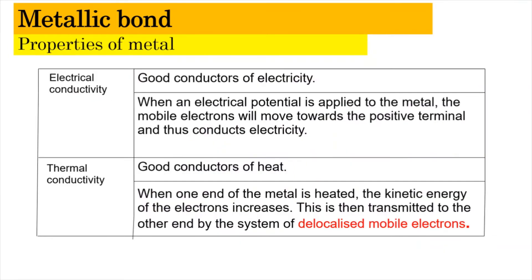Because of the delocalized properties of the electrons in the electron sea model, the electrons will move towards the positive terminal when an electrical potential is applied. When electrons move from the negative terminal to the positive terminal, there is a movement of electrons, and this movement of electrons is called electricity. This causes the metal to have electrical conductivity, making it a good electrical conductor.